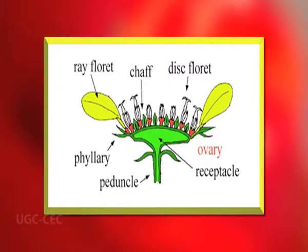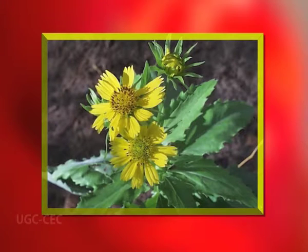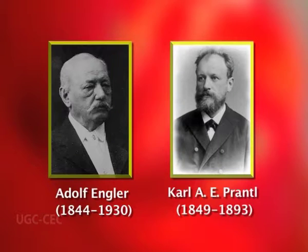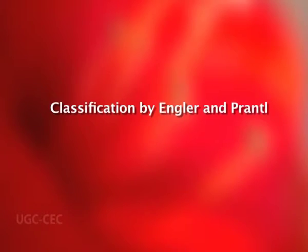Additional advanced features of Compositae include zygomorphy of ray florets, unisexuality of ray florets, adaptation of pollination, and excellent means of dispersal of its fruits. Engler and Prantl included keys and descriptions of all known genera of plants from algae to angiosperms. Their system of classification is based on the trends of evolution in existing families. Now we will discuss the outline of classification of Engler and Prantl. In this system, the plant kingdom is divided into 14 divisions.